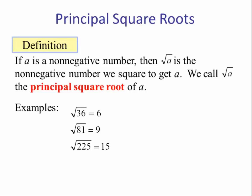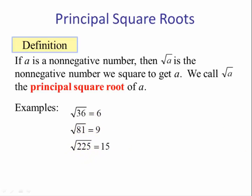Here are some examples. The square root of 36 is 6. The square root of 81 is 9. And the square root of 225 is 15. So what this is telling us is if I take this number and square it I get 36. What number squared will give me 81? The answer is 9. And 15 squared is 225.